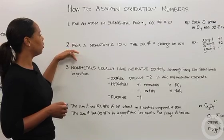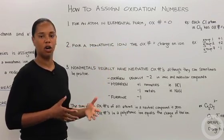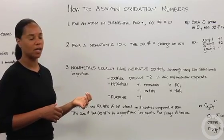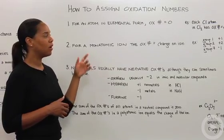For the second rule, for a monatomic ion, the oxidation number is going to equal the charge on the ion. For instance, group one, your alkali metals, when they are oxidized, they're going to lose an electron to get a plus one charge.